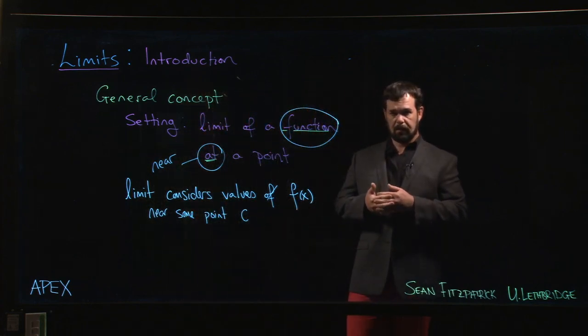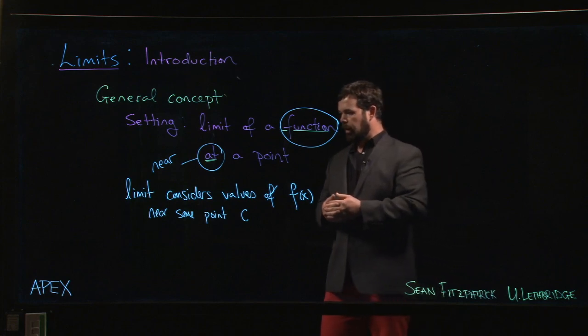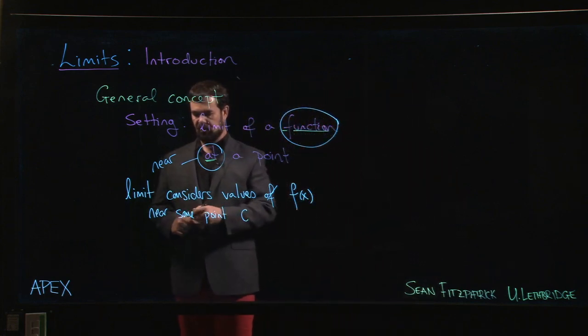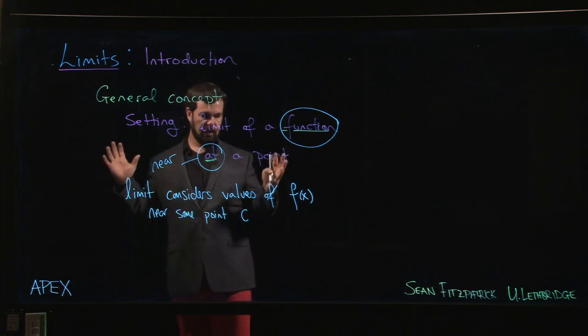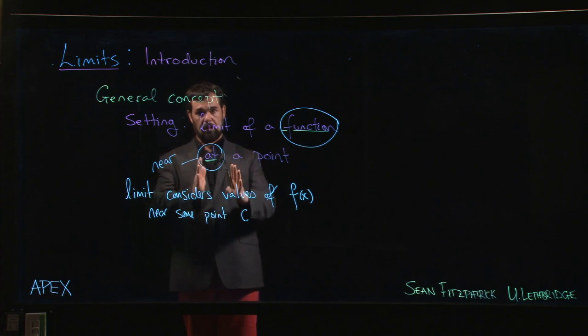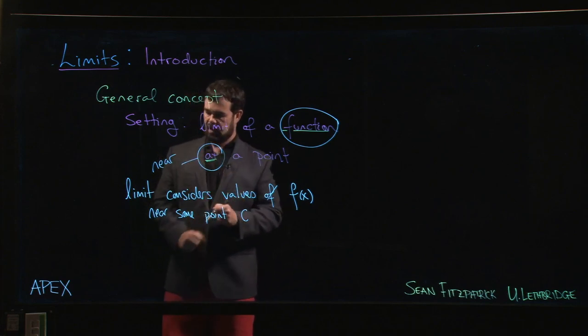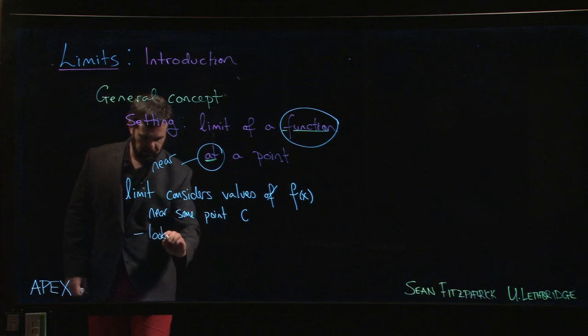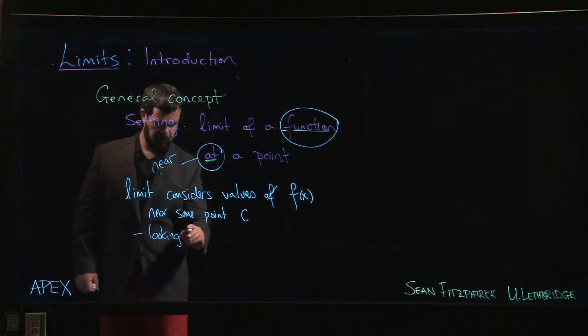Near some point, let's call that point maybe c. And what the limit is looking at, the limit is sort of looking at the behavior of your function as you get closer and closer to that point. So that's the sense in which we mean near. We mean we're going to look at x values that are close to that point, maybe a little bit closer, a little bit closer, a little bit closer.